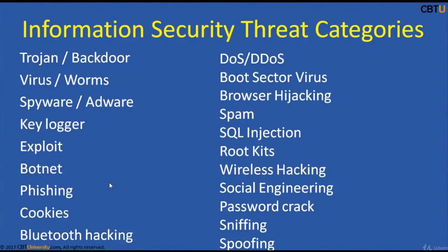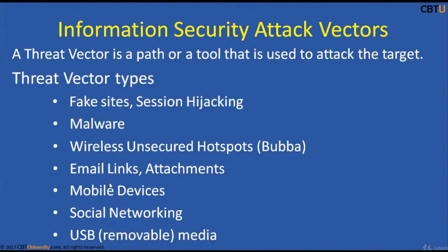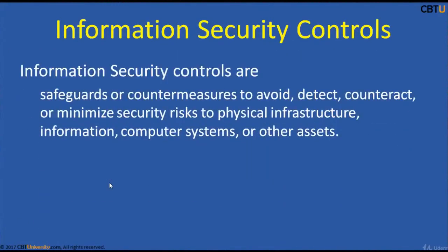Information Security Threat Categories. We have many security threat categories and we shall be covering each of these in the coming sessions. Information Security Attack Vectors: a threat vector is a path or a tool that is used to attack the target. Threat vector types include Fake Sites, Session Hijacking, Malware, Wireless Unsecured Hotspots, Email Links, Attachments, Mobile Devices, Social Networking, and USB Media.